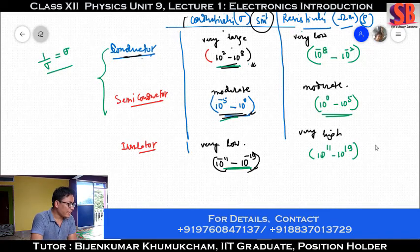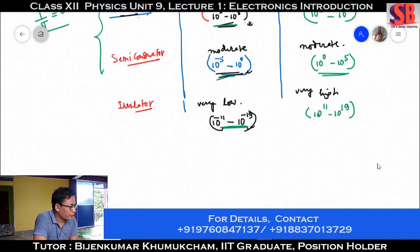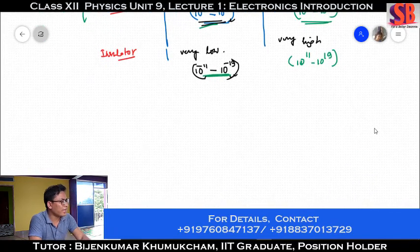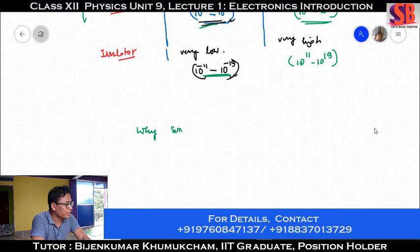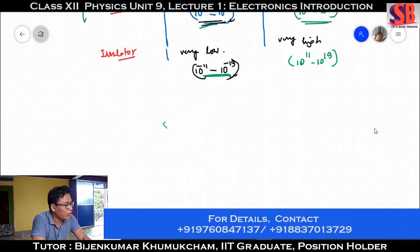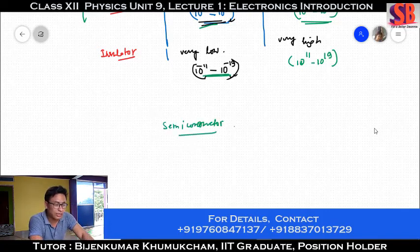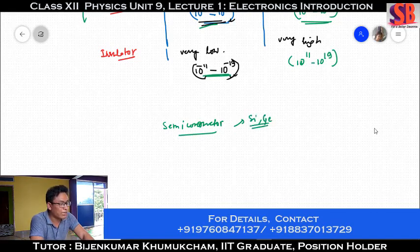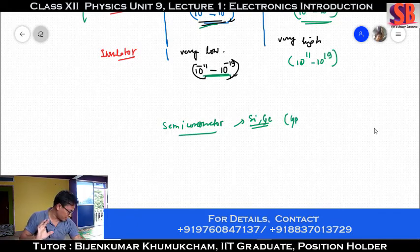Why is semiconductor so important? This is a semiconductor example. Semiconductor examples are silicon and germanium. Silicon belongs to Group 14. Group 14 elements include carbon — it's called silicon. You know what that means?